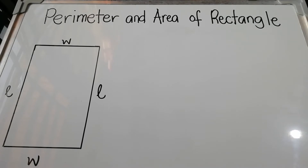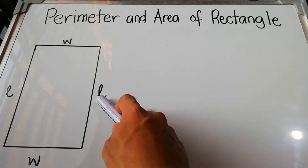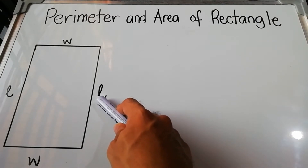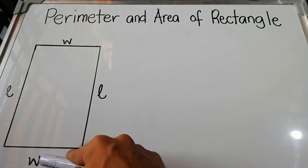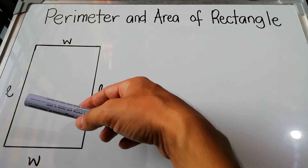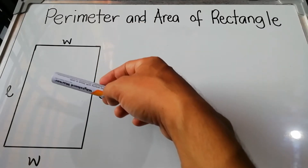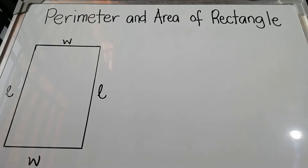A rectangle has four sides, and the opposite sides of the rectangle are congruent, meaning the measurements of the opposite sides are equal. So if we mark this one as W, which is width, and this one as L, which is length, the opposite sides of W and L have the same measurement.